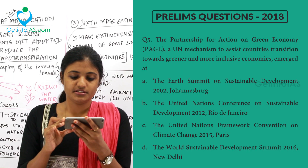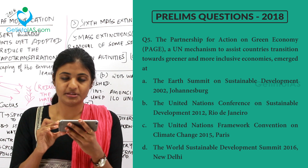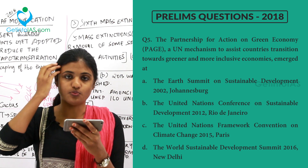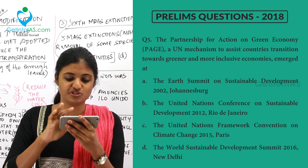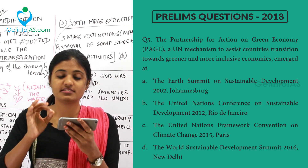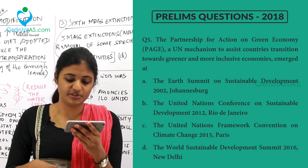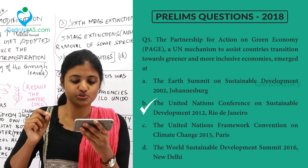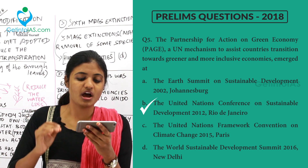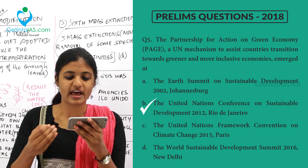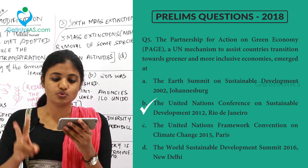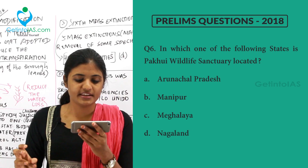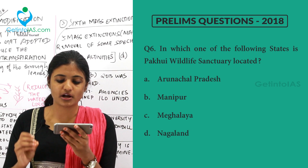Moving to the next question: the Partnership for Action on Green Economy (PAGE), a UN mechanism to assist countries transition towards greener and more inclusive economies, emerged at what event? The correct option is option B — the United Nations Conference on Sustainable Development 2012, held at Rio de Janeiro. Under this conference only the PAGE initiative came, with its two aims of growing a greener and inclusive economy. So it was brought in at the 2012 Rio de Janeiro meet.